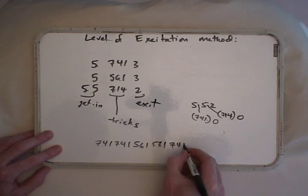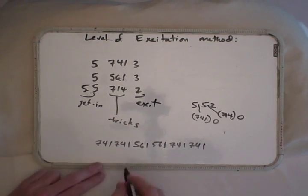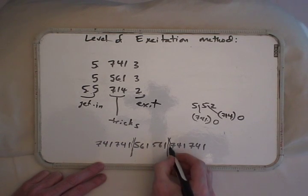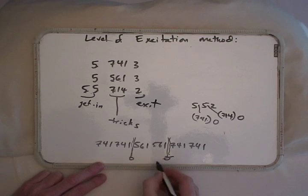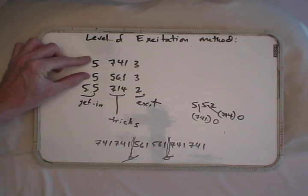Then go right back into 741 without there being any transition sequence at all. There's an empty, a null transition sequence. There's nothing there because the level of excitation is the same.